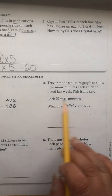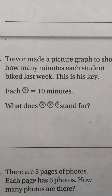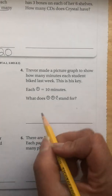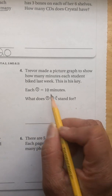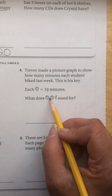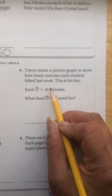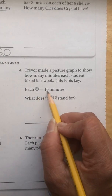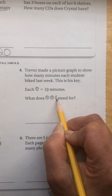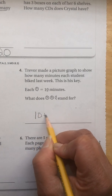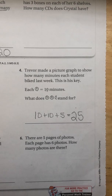Let's do number four. Trevor made a picture graph to show how many minutes each student biked last week. One wheel equals ten minutes, so you have to count by tens. For Trevor, I see two whole wheels and then a half a wheel. If a whole wheel equals ten, what's half of ten? If you said five, you are correct. So this is ten, twenty, and half of ten is five. Ten plus ten plus five gives me twenty-five. Trevor biked for twenty-five minutes.